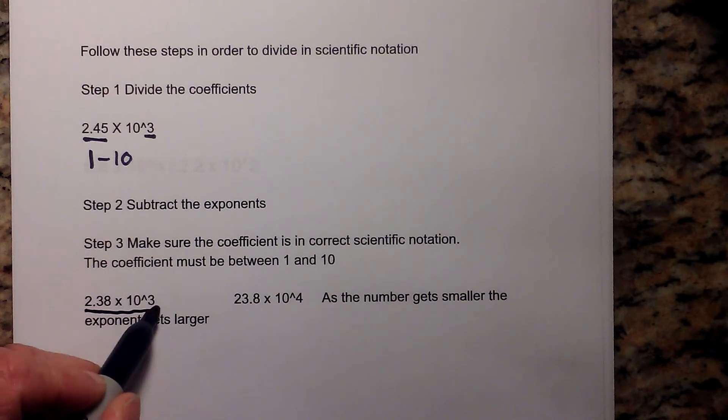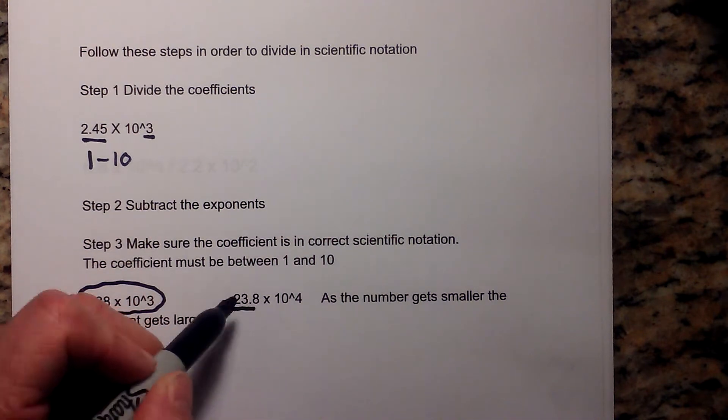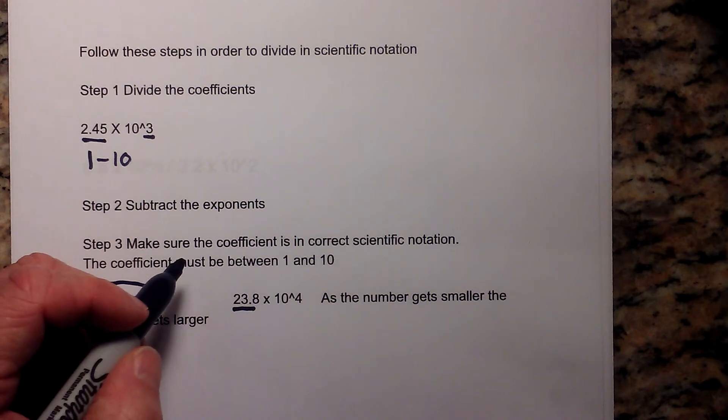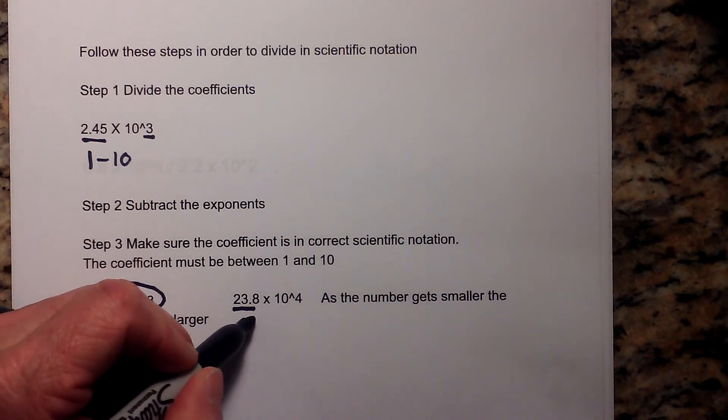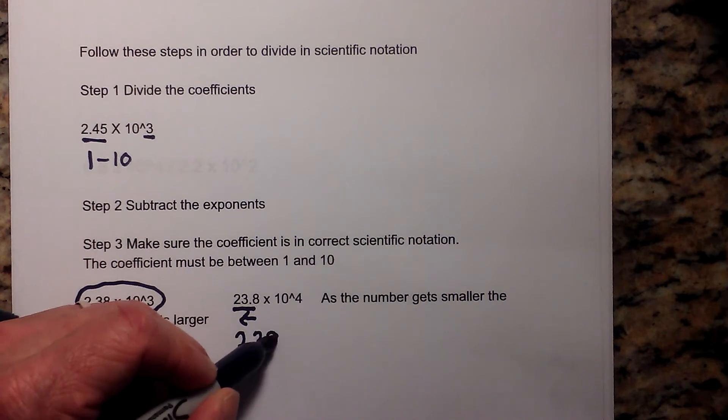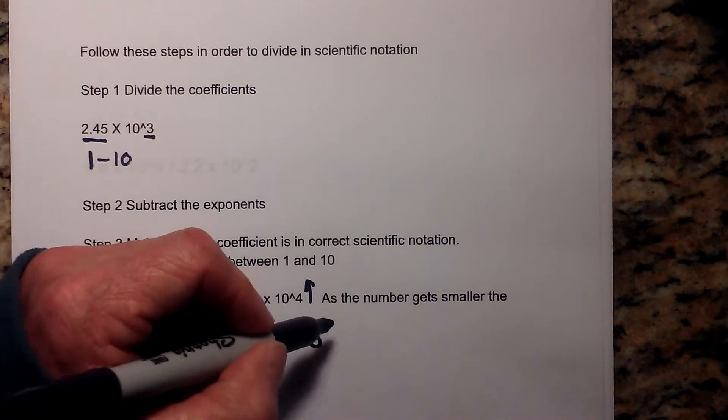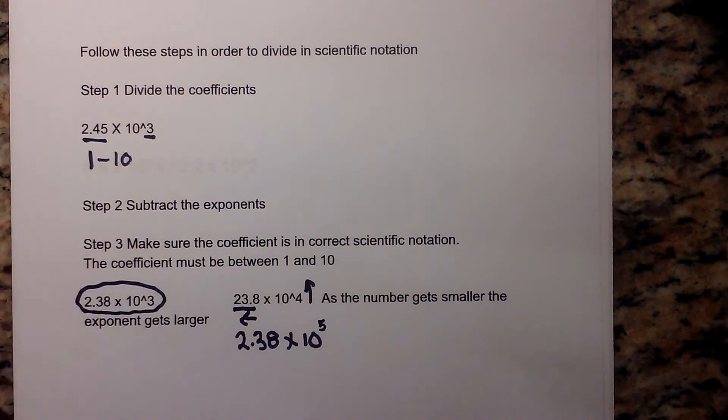2.38 times 10 to the third is correct because 2.38 is between 1 and 10. 23.8 times 10 to the fourth is incorrect, so I need to move the decimal place 1 to the left to get 2.38. Anytime the number gets smaller, the exponent gets larger, so that would be 10 to the fifth.